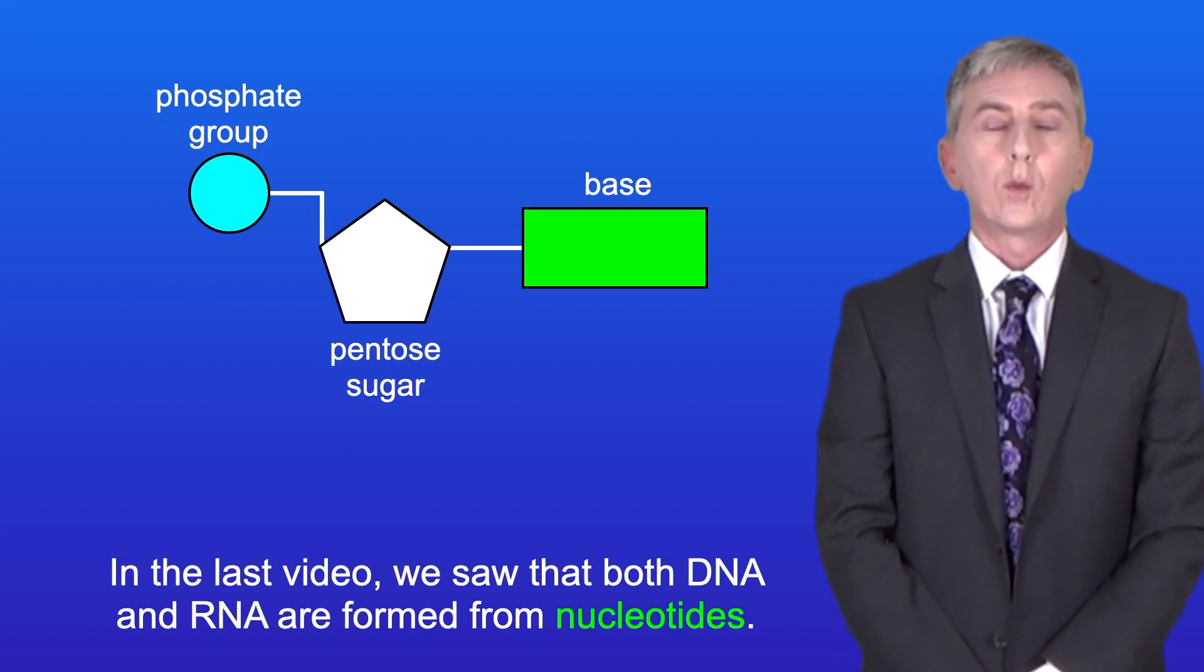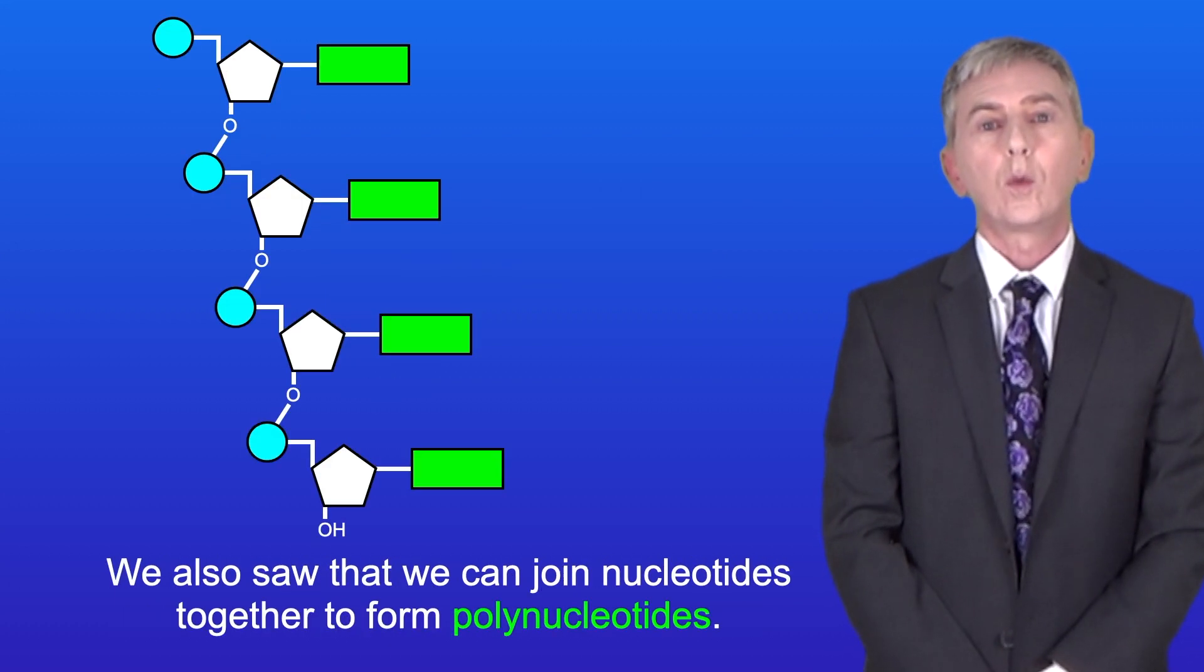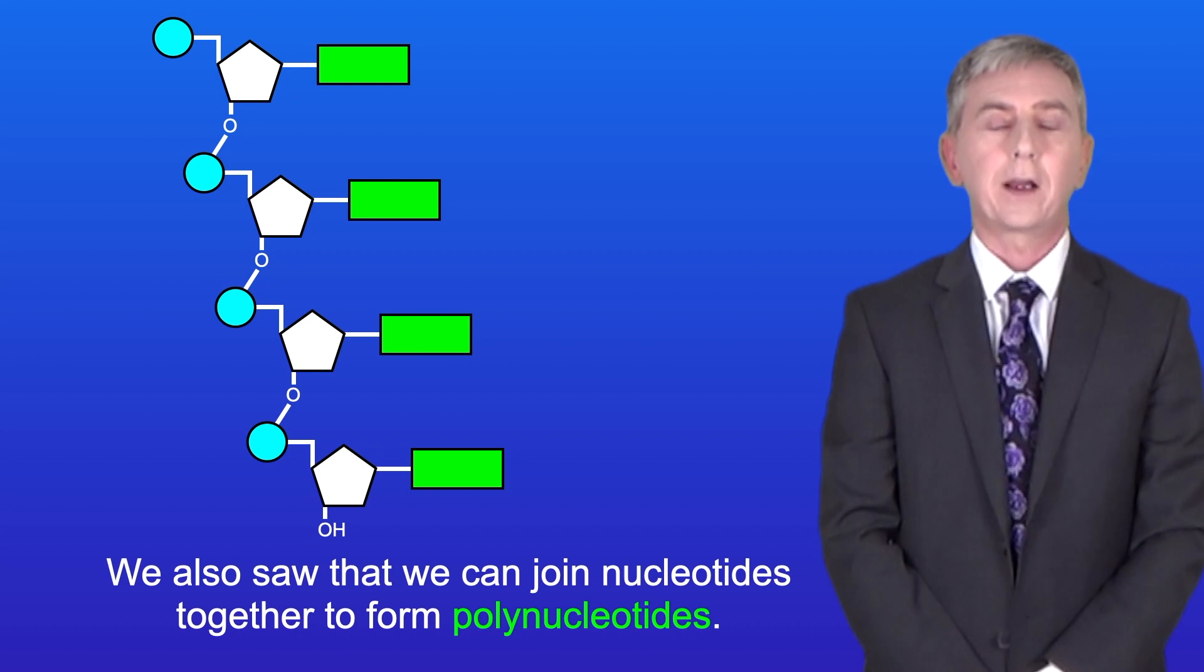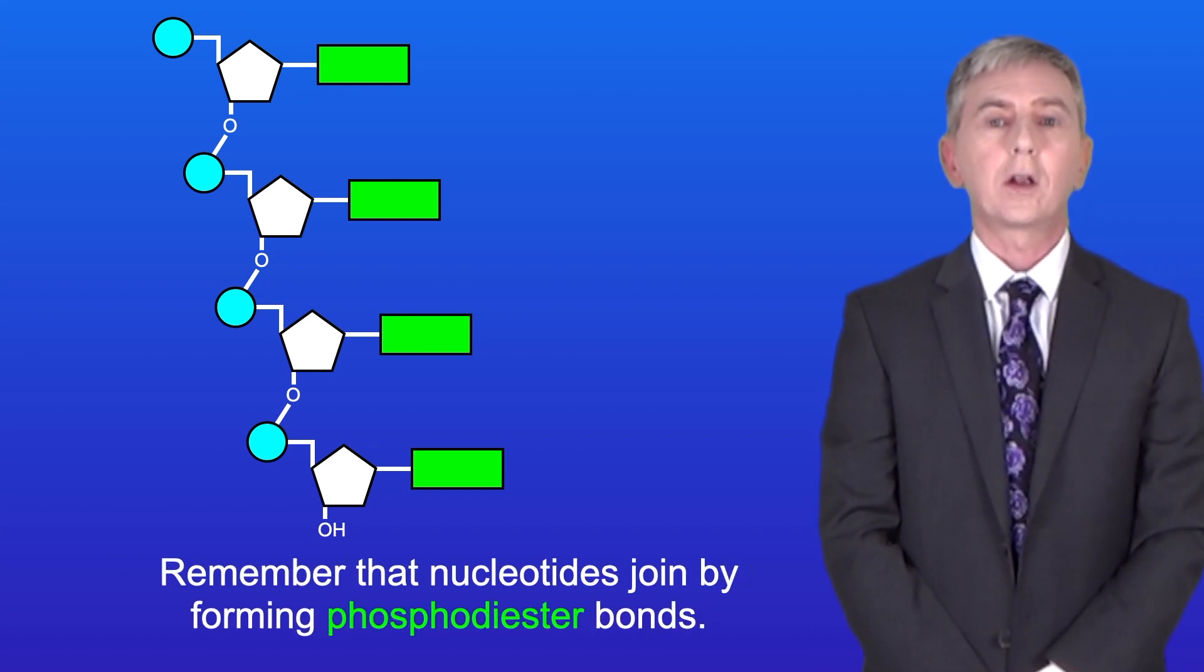In the last video we saw that both DNA and RNA are formed from nucleotides and I'm showing you the general structure of a nucleotide here. We also saw that we can join nucleotides together to form polynucleotides and remember that nucleotides join by forming phosphodiester bonds.